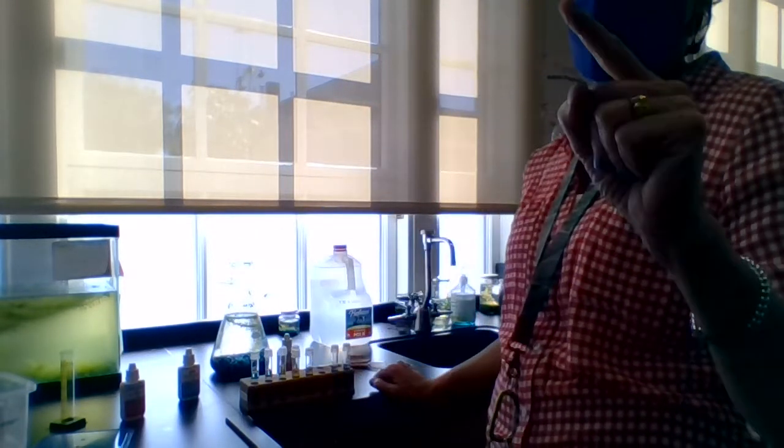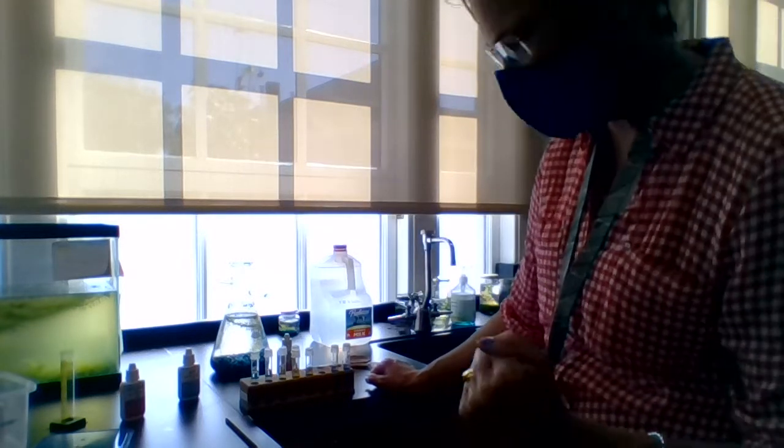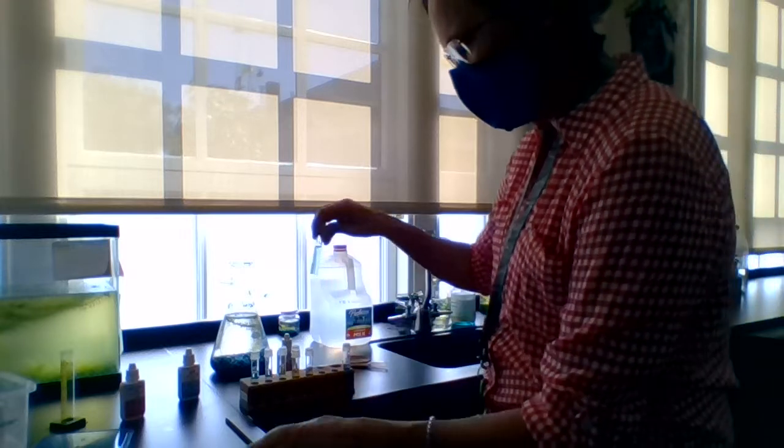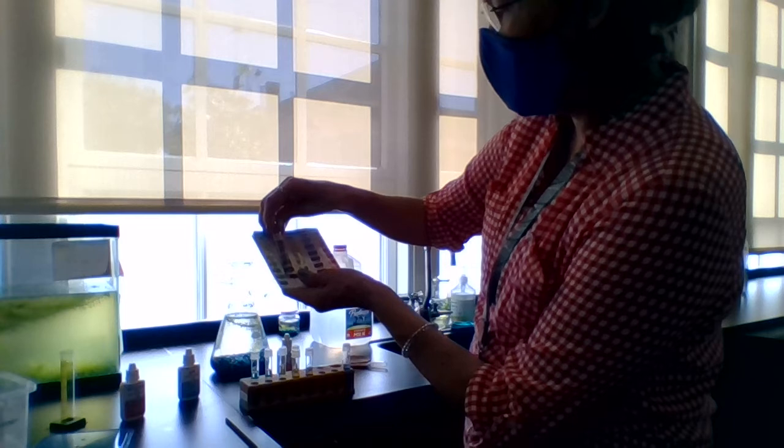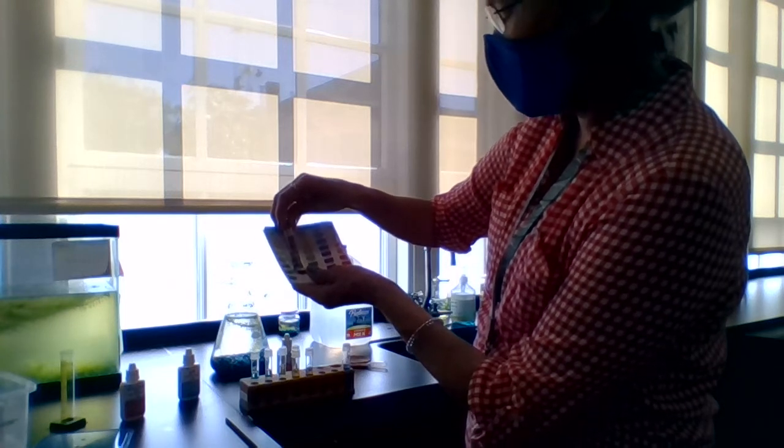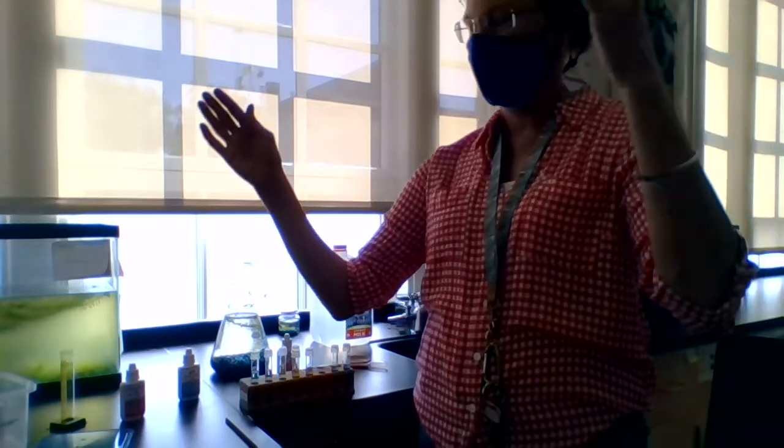And remember, what does a high pH mean? Acidic or basic? Basic. So it is basic. Whereas the aquarium is very close to either 7 or 6.8, so the aquarium is a more balanced pH and the flask is a pH of close to 8.